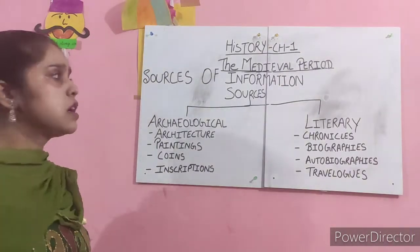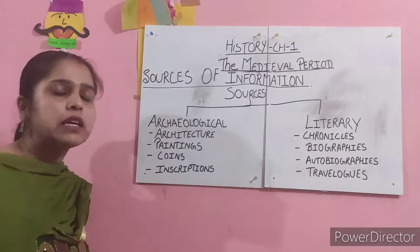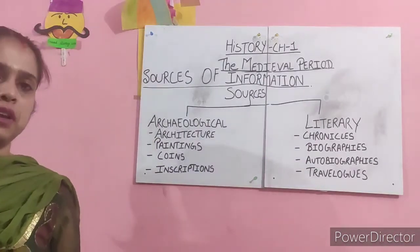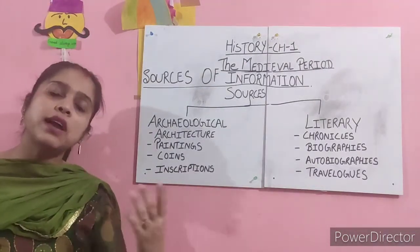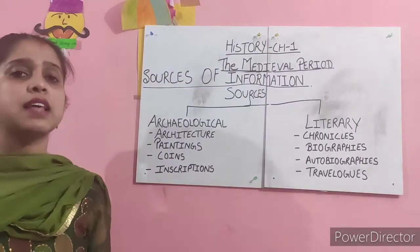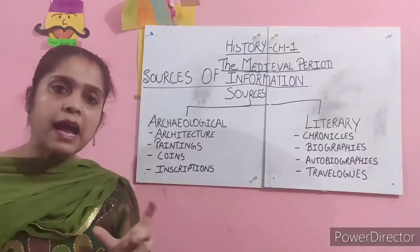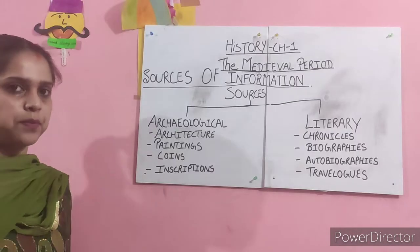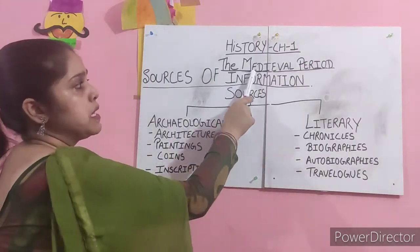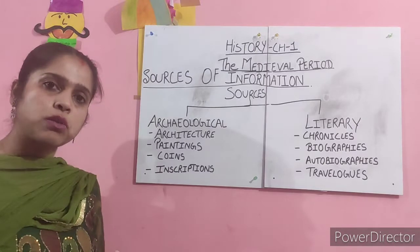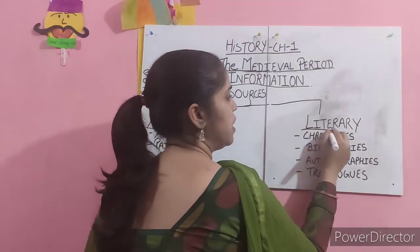Today we are going to cover the sources of information. History is the study of the past, but how do we study that past? That study is done through information gathered from that time. Basically, there are two sources of information which tell us about the medieval period: archaeological sources and literary sources.